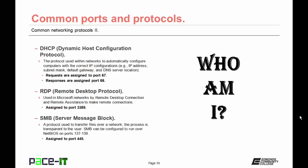Then there's DHCP or Dynamic Host Configuration Protocol. This is the protocol used within networks to automatically configure computers with the correct IP configuration. There are two ports used with DHCP — requests are assigned to port 67 and responses from the DHCP server are assigned to port 68.